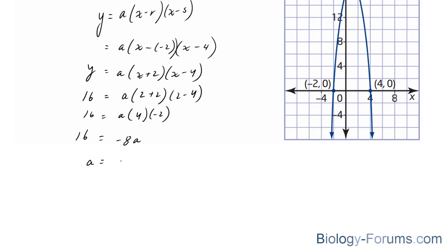Therefore, a is equal to 16 divided by negative 8, which is equal to negative 2. And therefore, our formula is y equals negative 2 times x plus 2 times x minus 4.